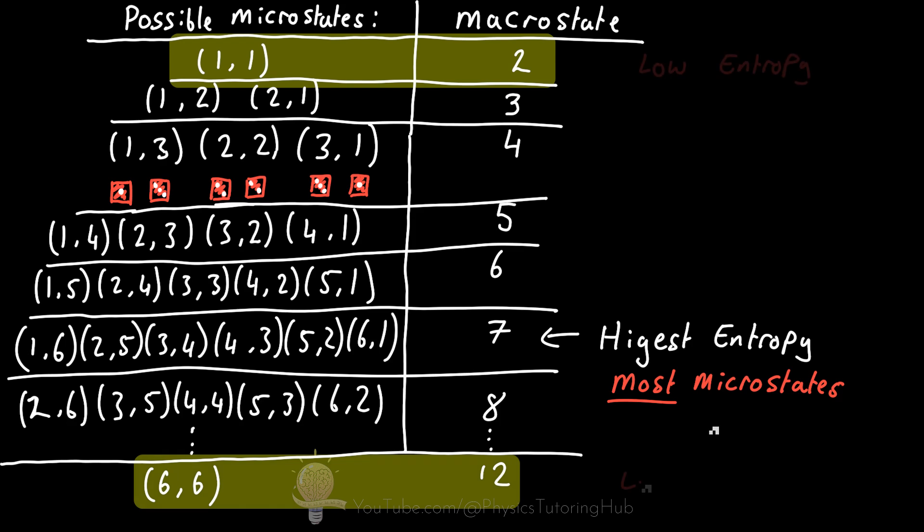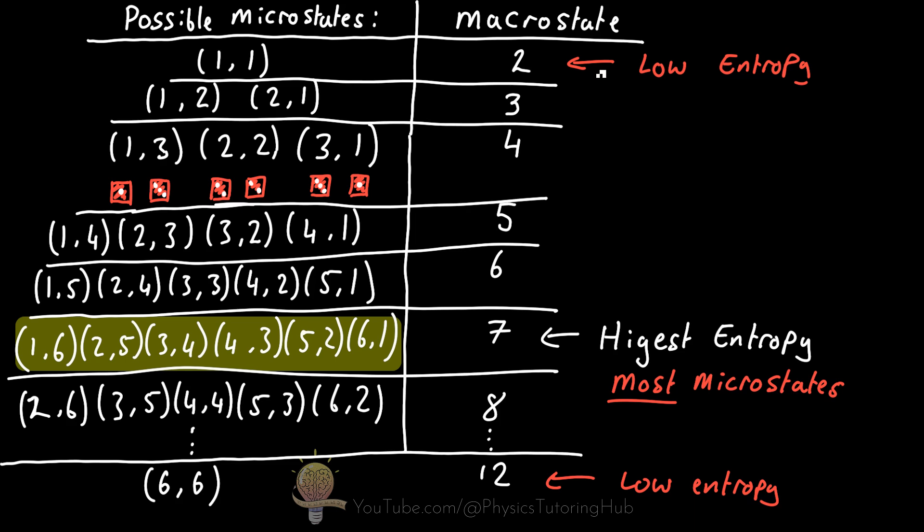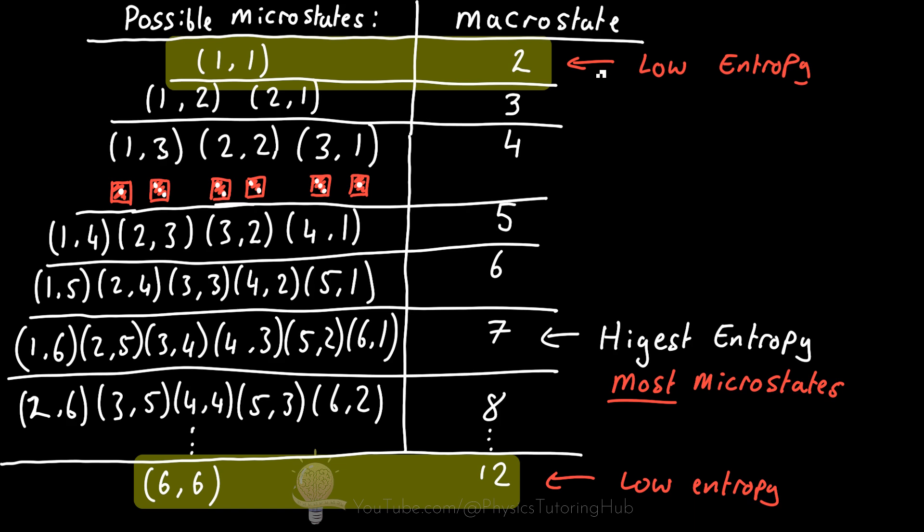And this is because only one pair of values can achieve this sum. So for a macrostate of two, a microstate of one and one can only achieve this value. And for a macrostate of twelve, we can only have a microstate of six and six. These macrostates only contain one microstate. In other words, they both have lower entropy. So entropy tends to increase over time because the probability of a system moving towards a macrostate with more accessible microstates is much higher than the probability of moving towards a macrostate with fewer accessible microstates.